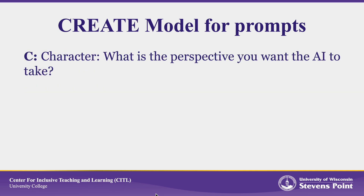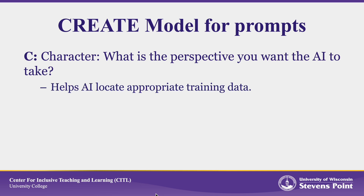First, let's look at Character. You should begin your prompt with information on the perspective you want the AI to take — that is, its character. Generative AI doesn't use all of the data that it was trained on when it responds to a prompt. Instead, it needs to locate a specific subset of input sources to draw on. By specifying the character that the AI is supposed to embody, you can help it narrow down its focus on more appropriate material.